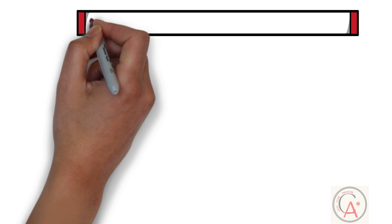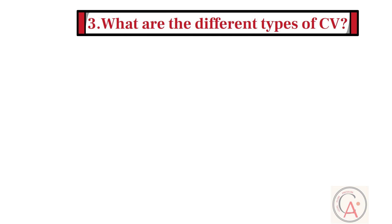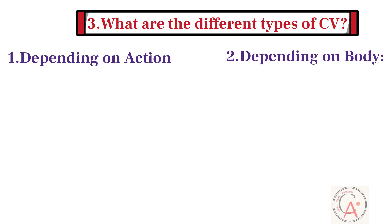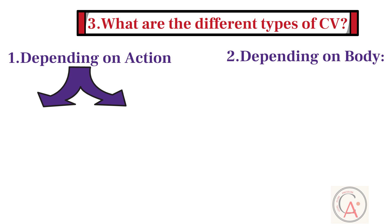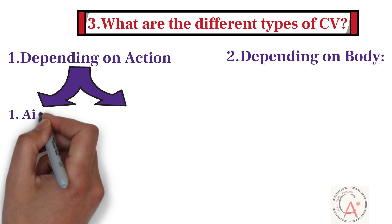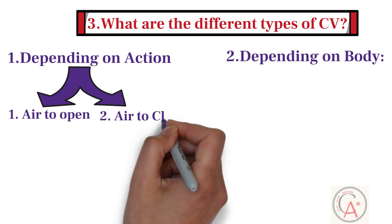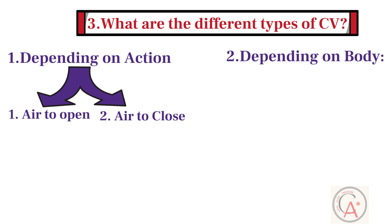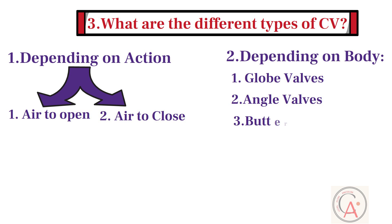Third question: what are the different types of control valves? Commonly used control valves can be divided into two categories — depending on action, and depending on body. Depending on action, there are two types: air to open, and air to close. Depending on the body, there are four types: globe valves (single or double-seated), angle valves, butterfly valves, and three-way valves.